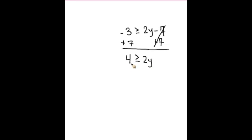Alright, now it's kind of a little weird reading it left to right. This is saying 4 ≥ 2y, and we're going to fix that in a second just so it makes more sense.